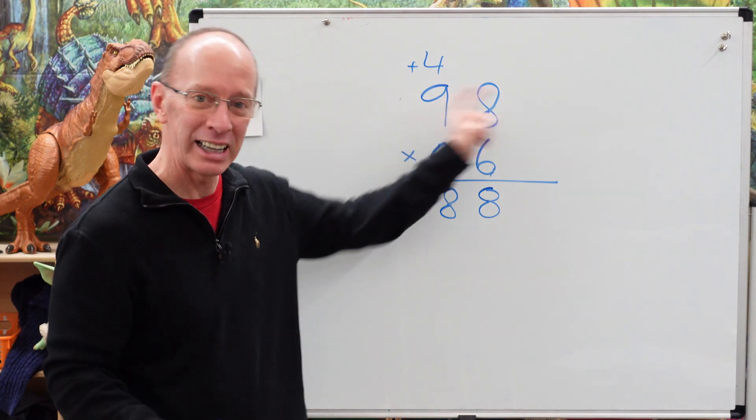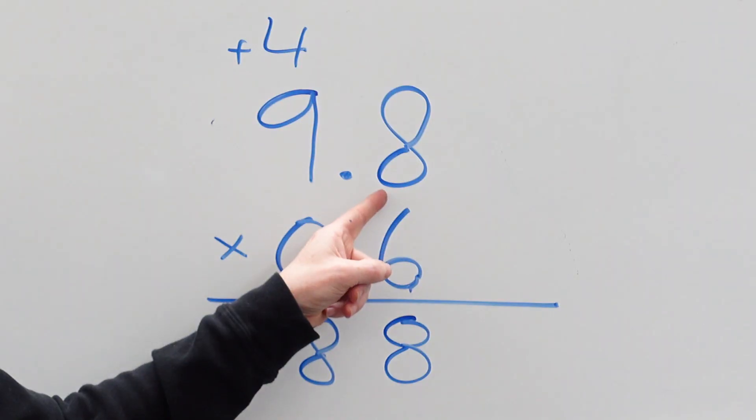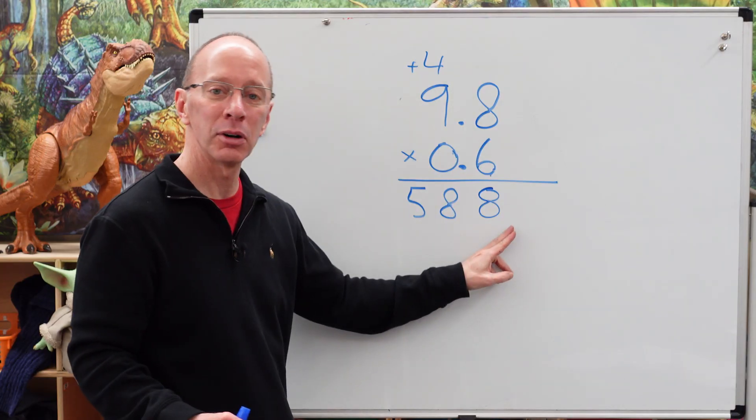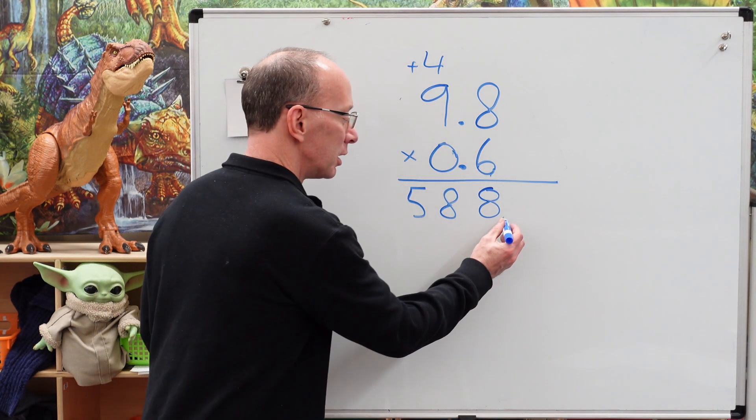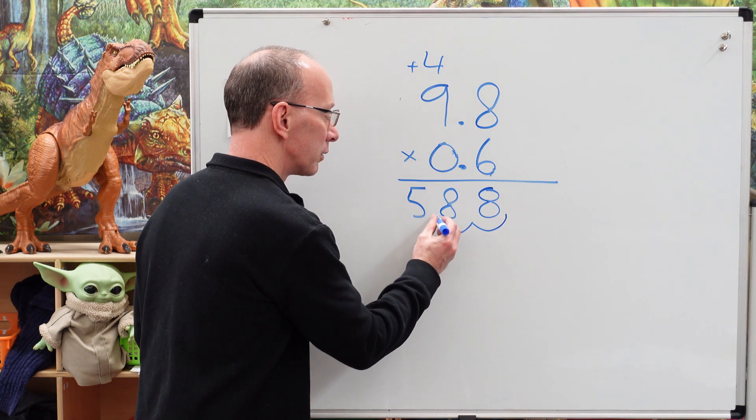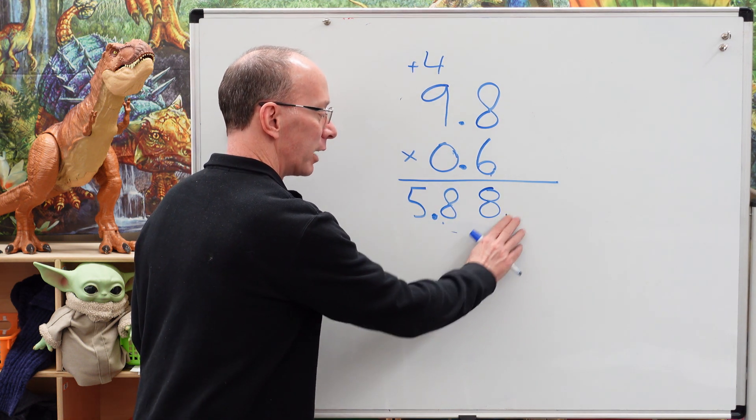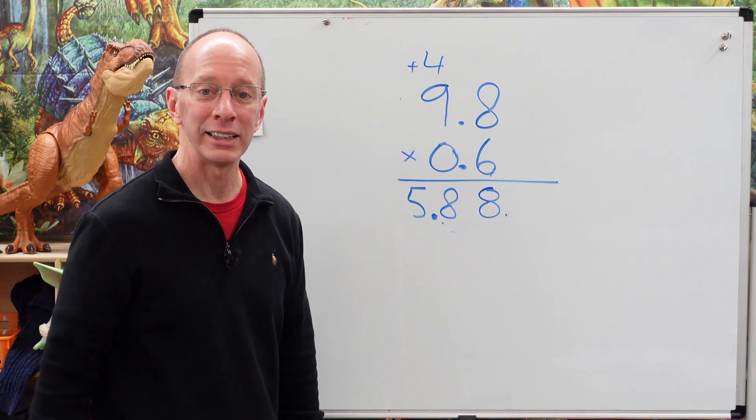Now we need to put in the decimal point. So let's count the numbers behind the decimal point. So we have 1 here and then 1 here. Remember that invisible decimal point I was talking about? It's right here. We're going to move it over two times. So we go to 1, 2. We're going to put the decimal point right there. So our answer is 5.88.